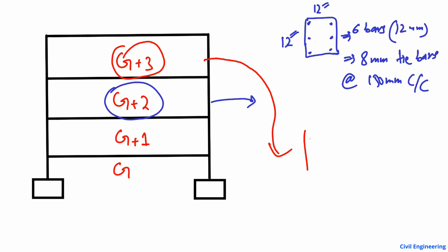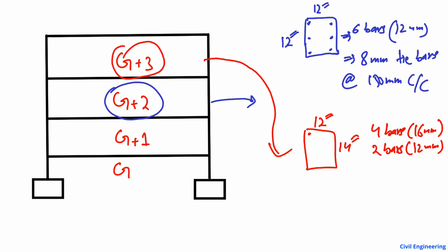For the third floor, the minimum column dimensions should be 14 inches by 12 inches. At least four bars of 16 millimeter diameter and two bars of 12 millimeter diameter should be provided, giving a total of six bars. For the stirrups or ties, use 10 millimeter tie bars at a 150 millimeter center-to-center spacing. This is the recommended cross-section for the different columns depending on the story of the building.